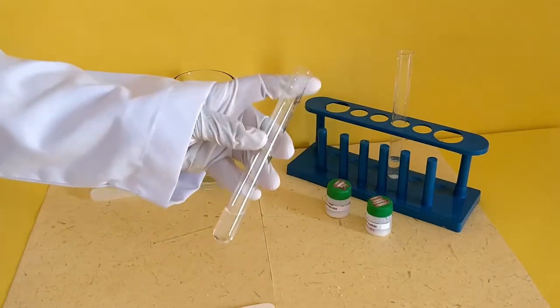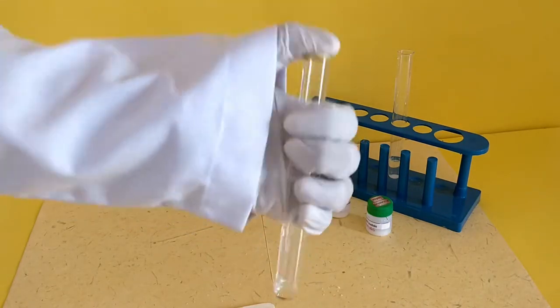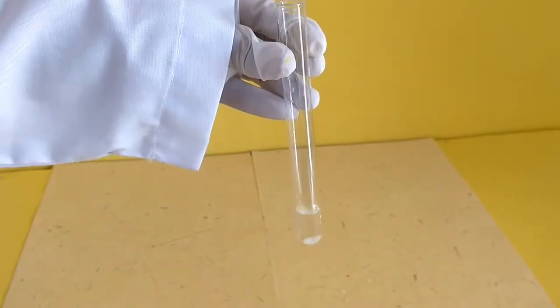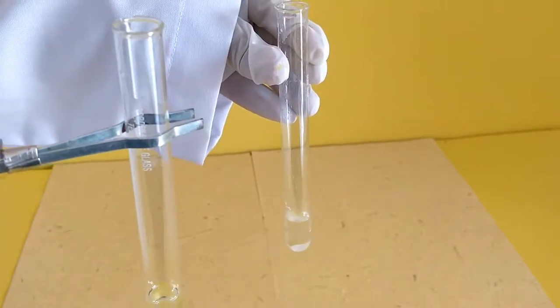Similarly, prepare an aqueous solution of potassium iodide in a separate test tube. Add the aqueous solution of potassium iodide to the aqueous solution of lead nitrate.